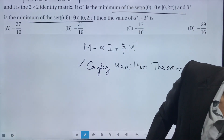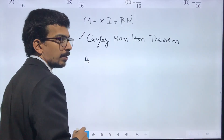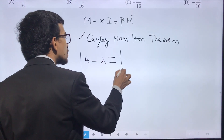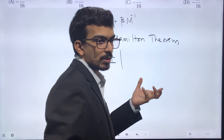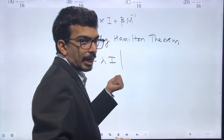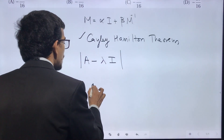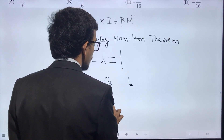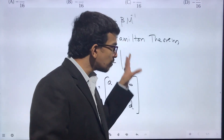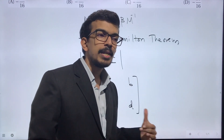I will quickly tell you what the theorem is. Suppose you have a square matrix A. You take scalar λ, find (A - λI), and compute its determinant. This quantity is going to be a polynomial in λ — for a 2×2 matrix it will be degree 2, for a 3×3 it will be degree 3. This is called the characteristic polynomial of the matrix A.